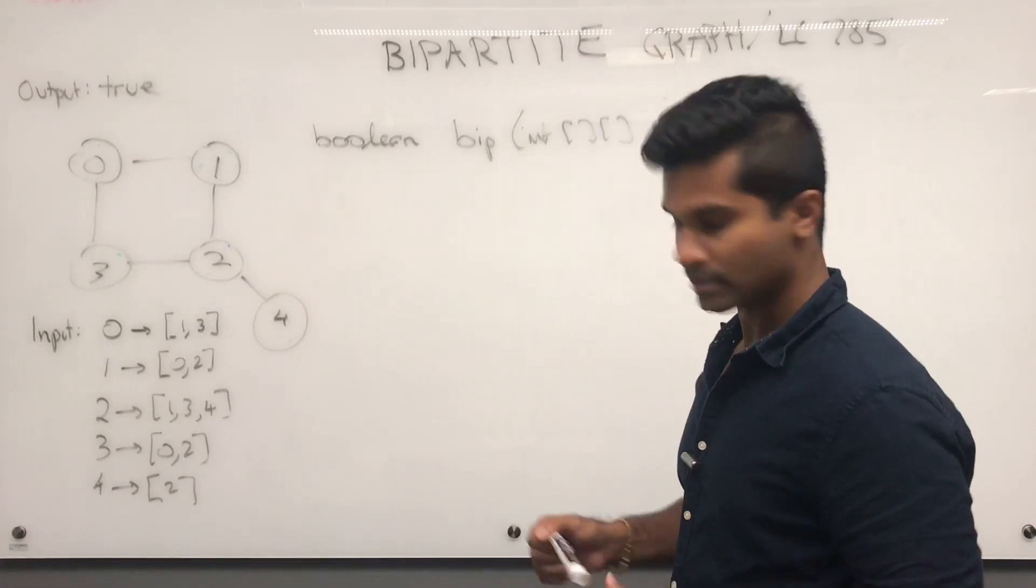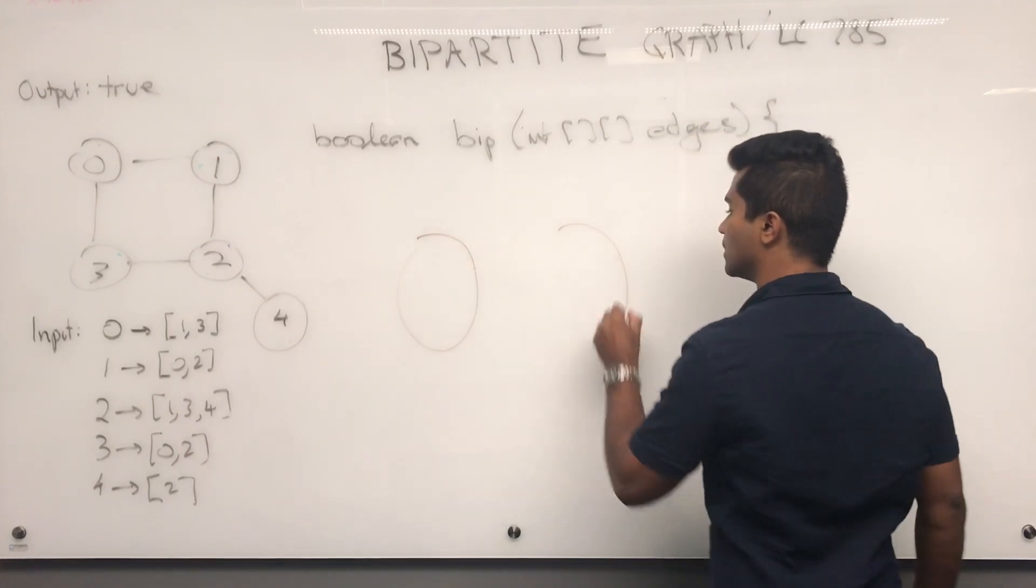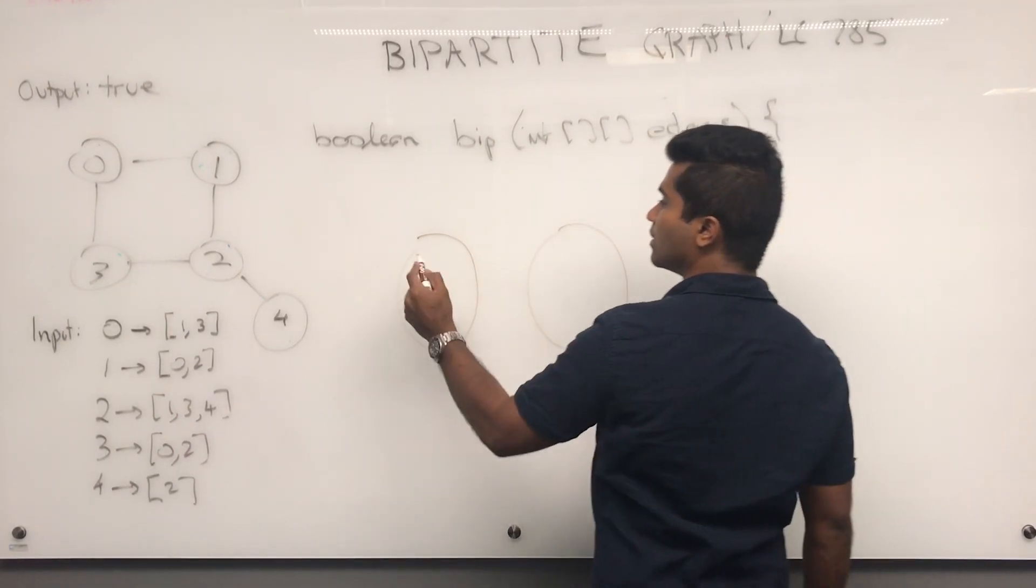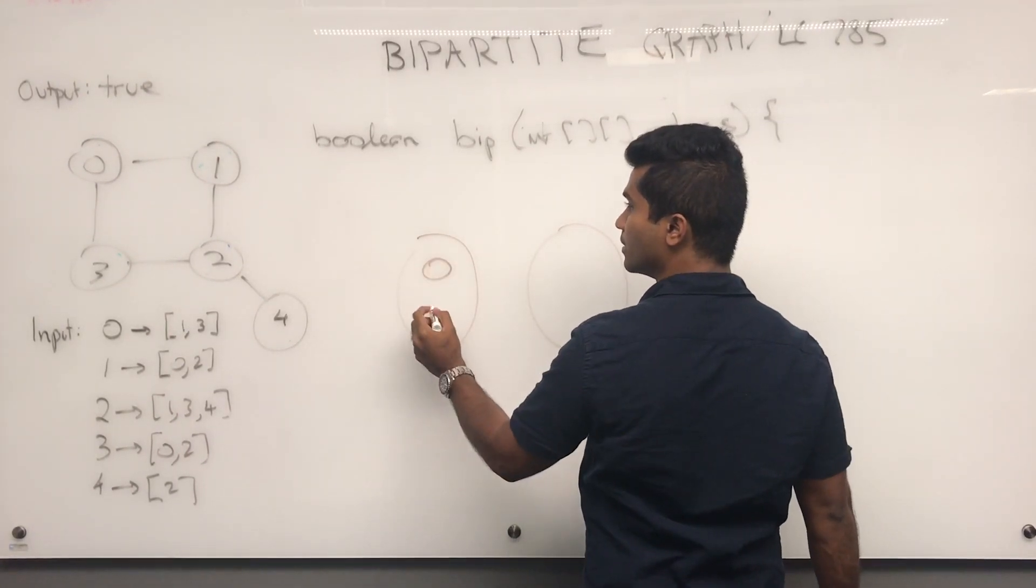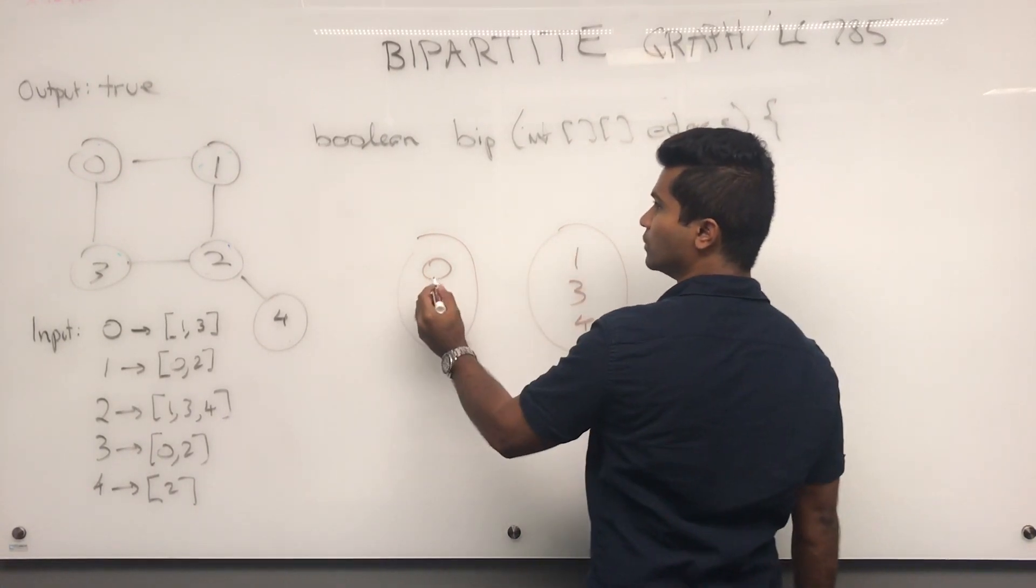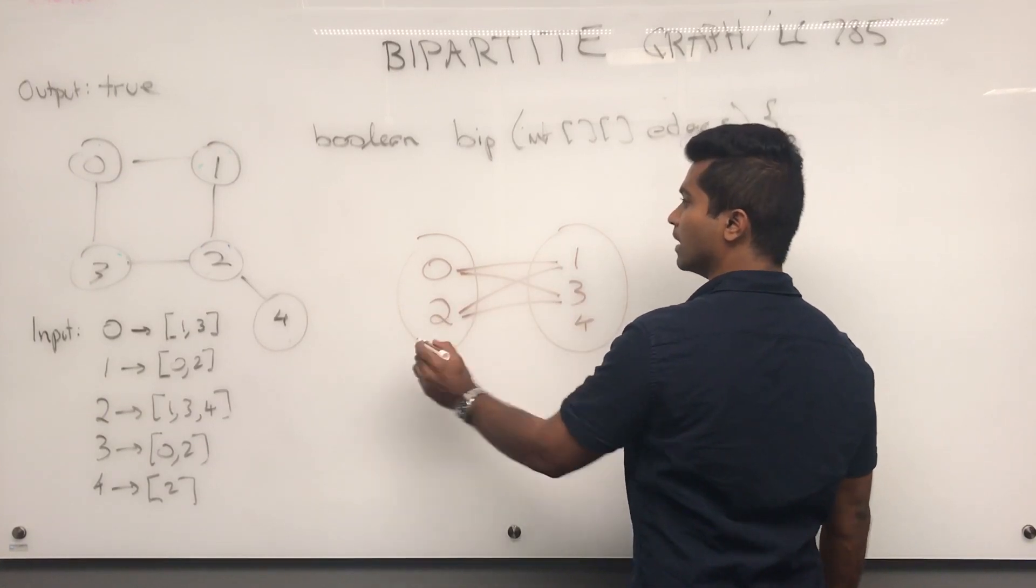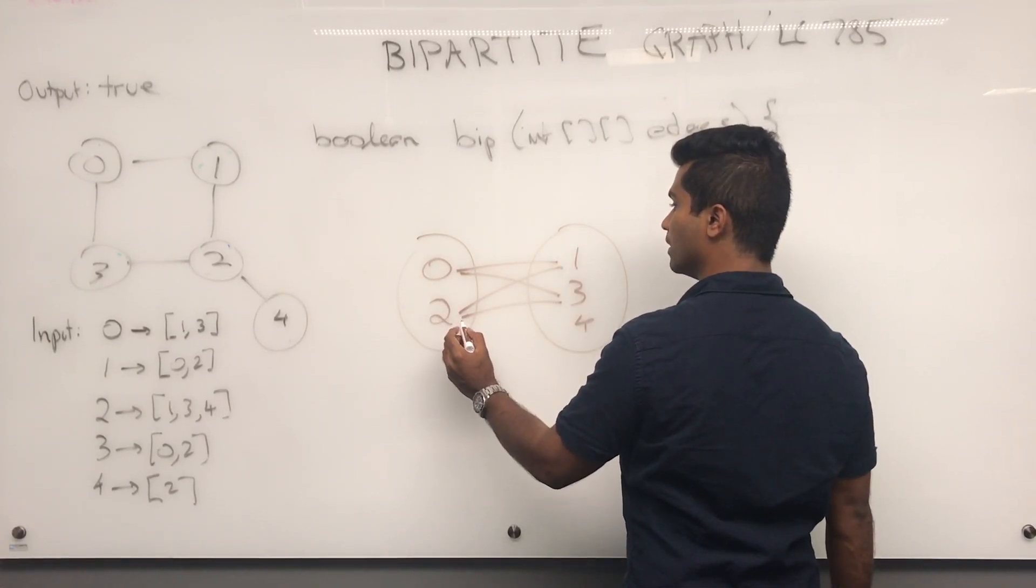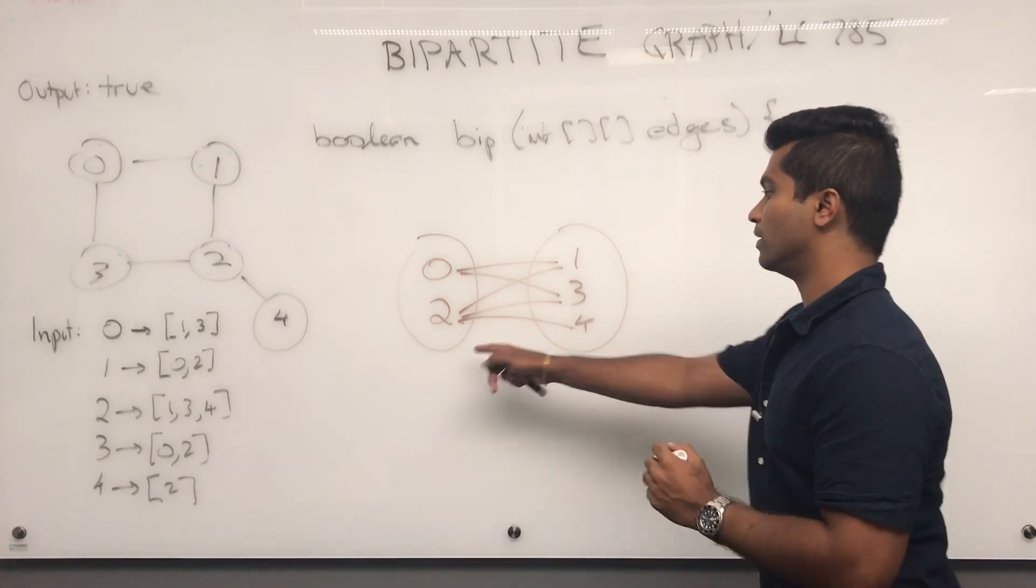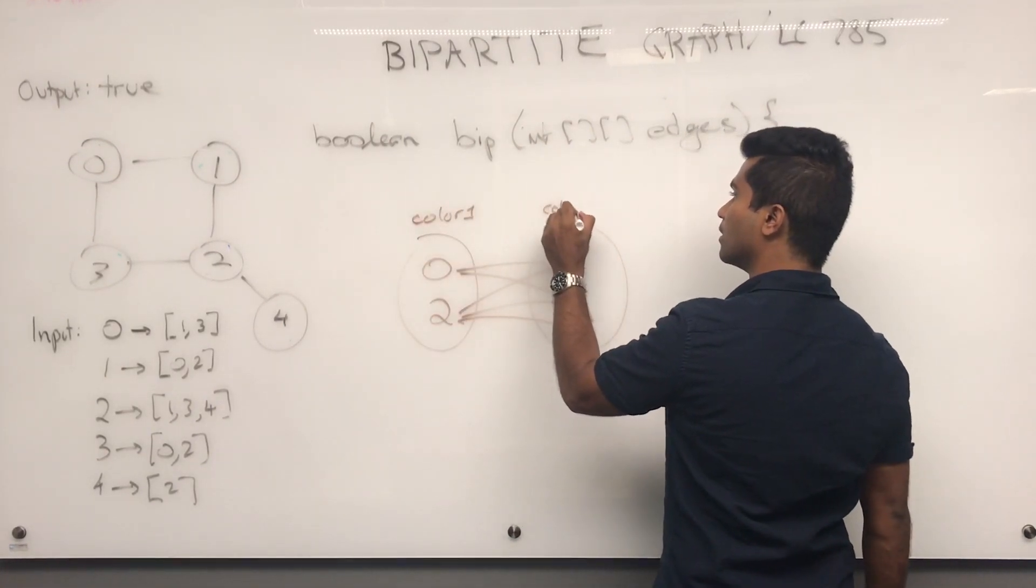So for something like this, it looks like this. This is set 1, set 2. We can put 0 and 2 in here, and here we'll put 1, 3 and 4. So 0 goes from 1 to 3, and 2 goes from 1 to 3, and 2 goes from 2 to 4.